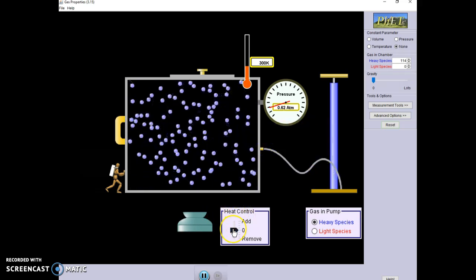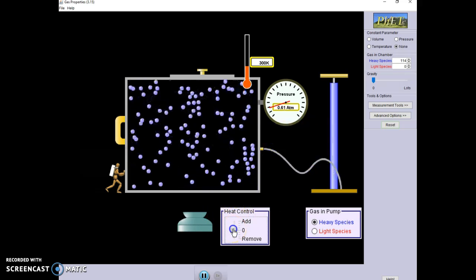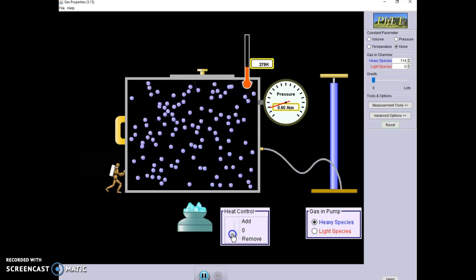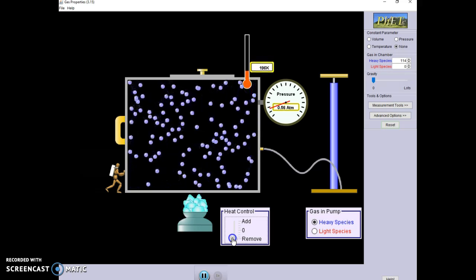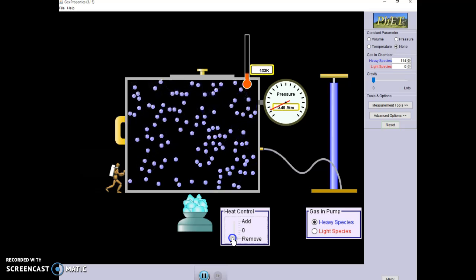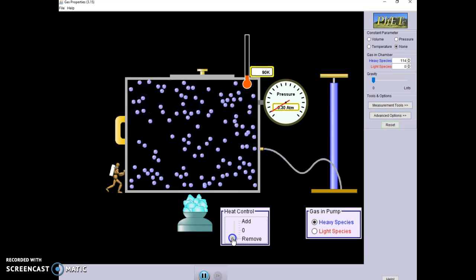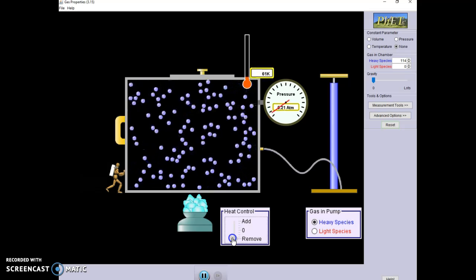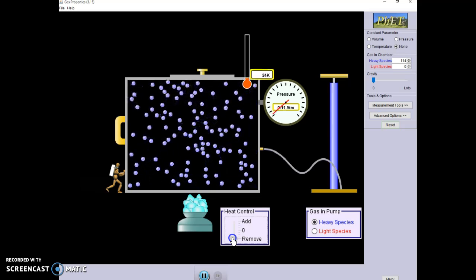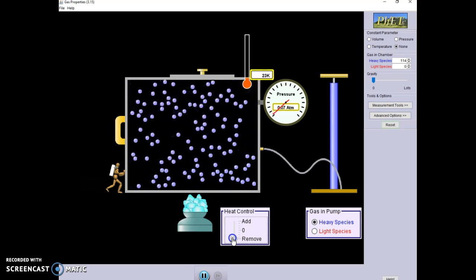Then it says let's remove some heat. So this is one of those laws about heat. Which one is it? In this case, to remove heat, we have ice below it. What happens to temperature and pressure and volume? You can look at all of those.